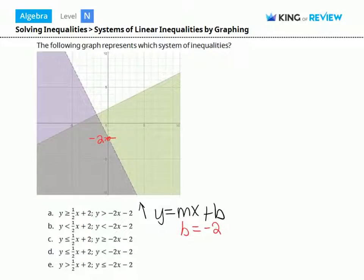Now let's determine the slope. There's another point on our line right here. Slope is rise over run. So we're going down 2 and over 1. So m equals negative 2 over 1, which equals negative 2.